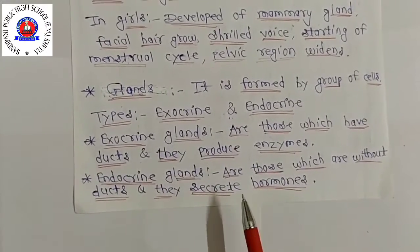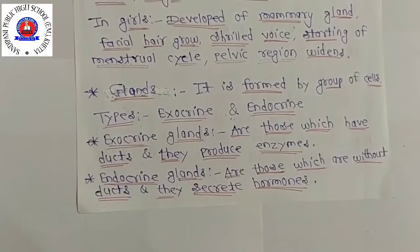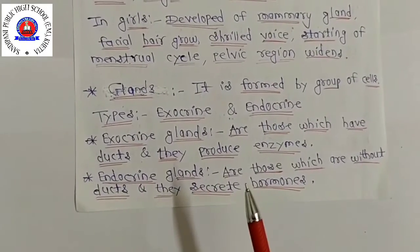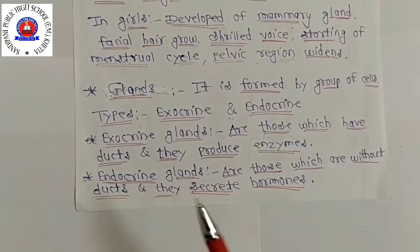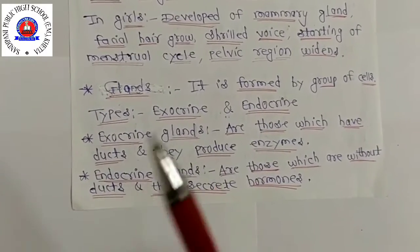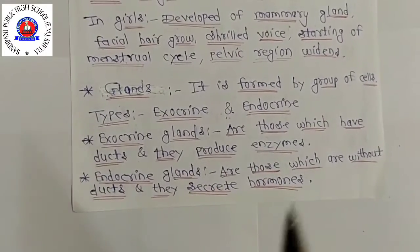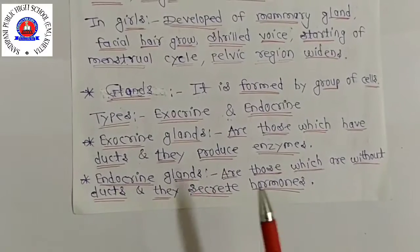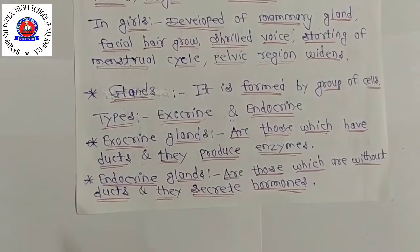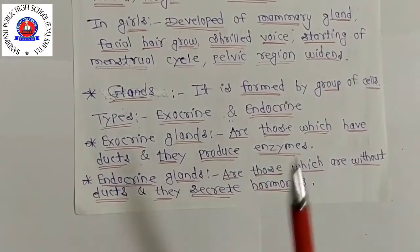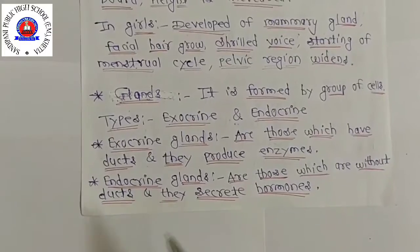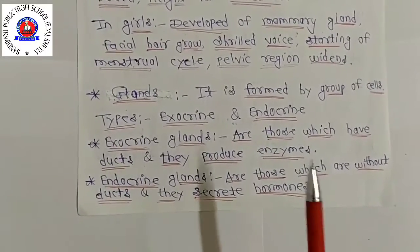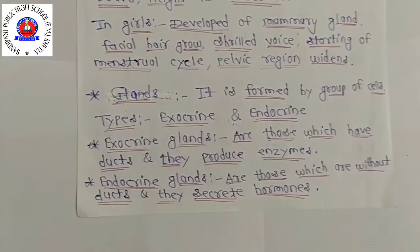These hormones reach the concerned body part through the blood and act on it. Hormones are a kind of chemical messenger because they are produced in one part of the body but act on another part of the body.